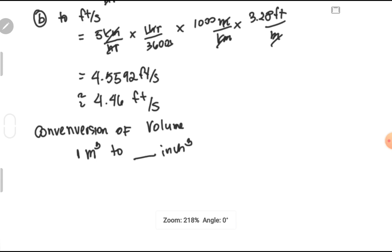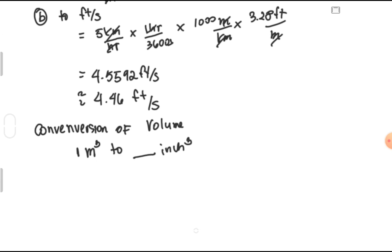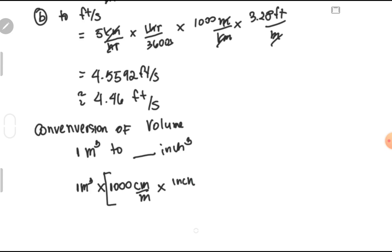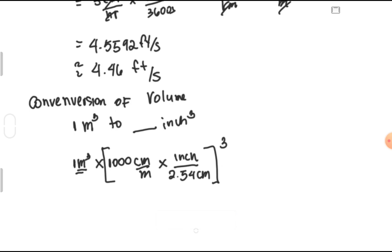How will we do that? We have 1 meter cube times 100 centimeters per meter, put in a bracket indicating we first multiply the terms inside. Then multiplied by 1 inch per 2.54 centimeters, and we cube the entire bracket. We need to cube it because we are dealing with meter cube — to cancel meter cube, we must also cube the terms inside the bracket.